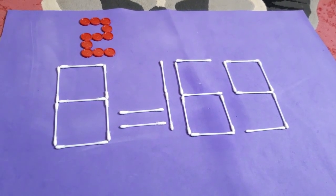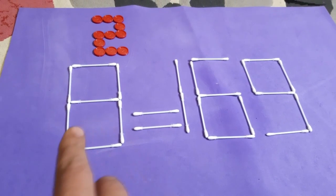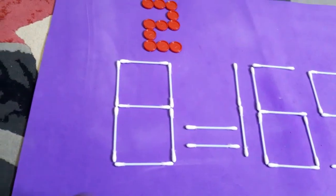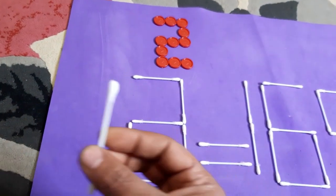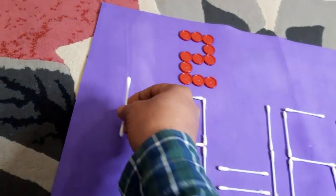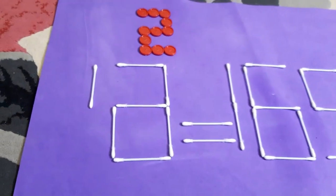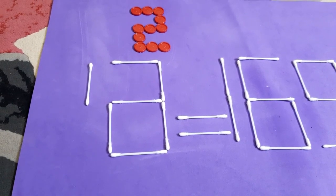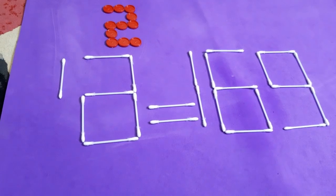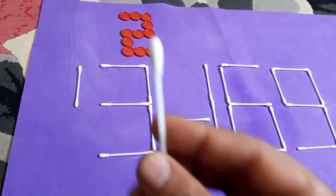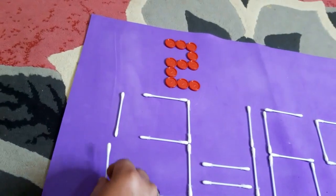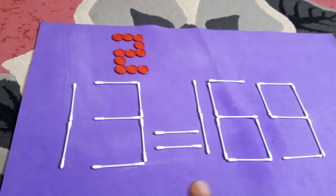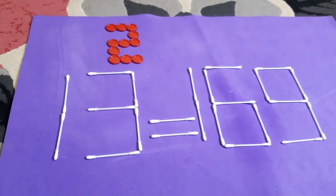Time is out. What are the two sticks that will be moved to get this result? The first stick is this one — where will you put this stick? Here. We still need the other stick. Which stick will you move to get 169? Of course it's this stick — we will put it here. Now we have 13 squared. 13 squared equals 169 — now it's correct.